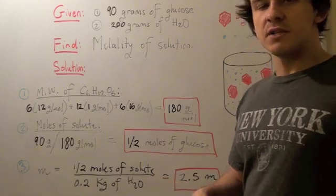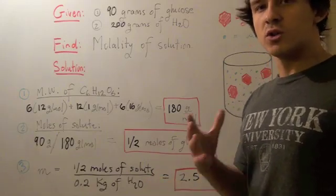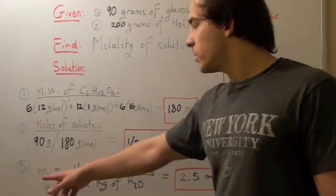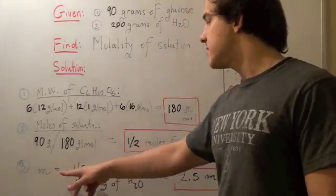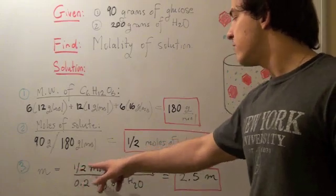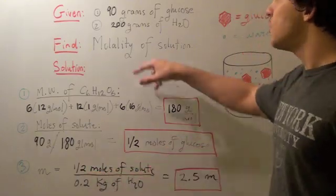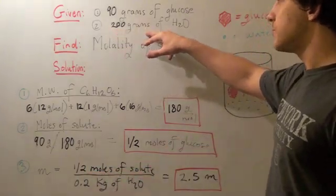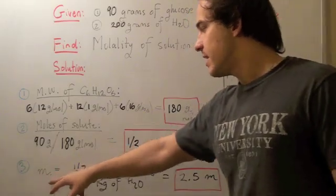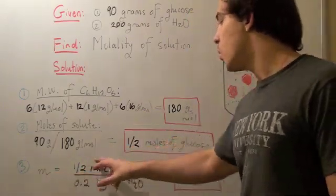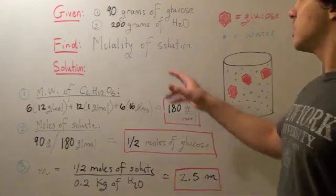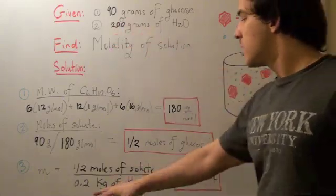The final step is to use the formula for molality. Lowercase m for molality equals one-half (the number of moles of solute) divided by... Now notice we're given 200 grams, and molality has units of moles per kilogram. So we have to convert 200 grams to kilograms.